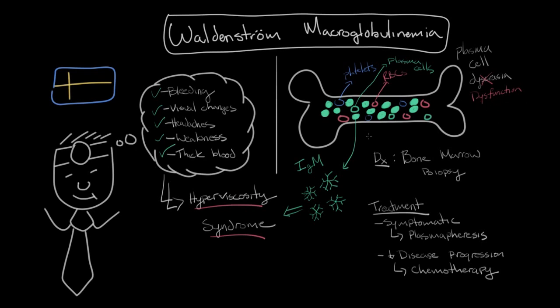So Waldenstrom macroglobulinemia is a plasma cell dyscrasia or a dysfunction of plasma cells in which there is an overproduction of the immunoglobulin IgM. And this results in thickening of the blood and a condition known as hyperviscosity syndrome, which is demonstrated by increased bleeding, some visual changes, headaches, weakness, and this obvious thickness of the blood.